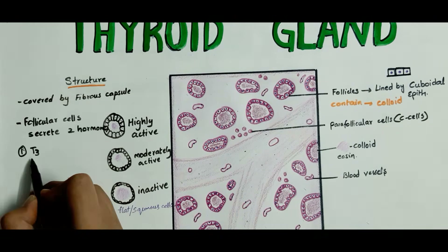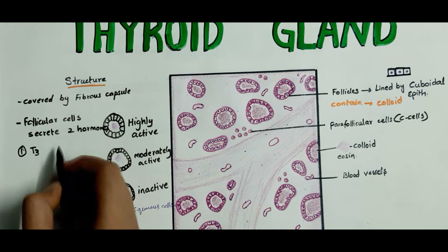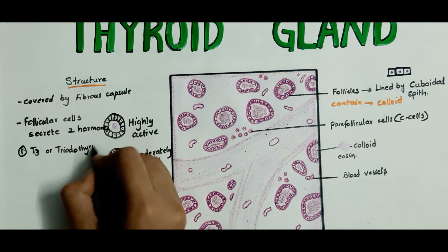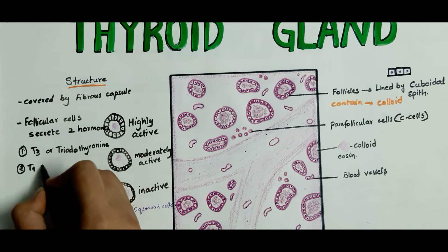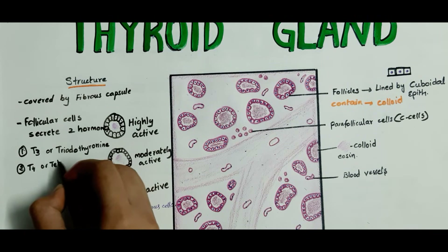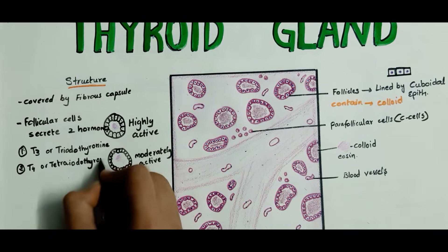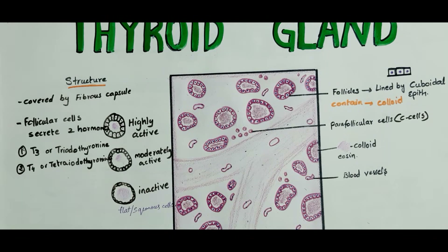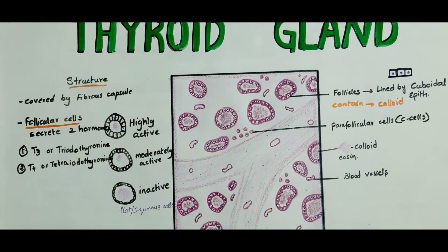These follicle cells secrete two hormones: the first hormone is T3 or triiodothyronine, and the second is T4 or tetraiodothyronine. These hormones influence the rate of metabolism.